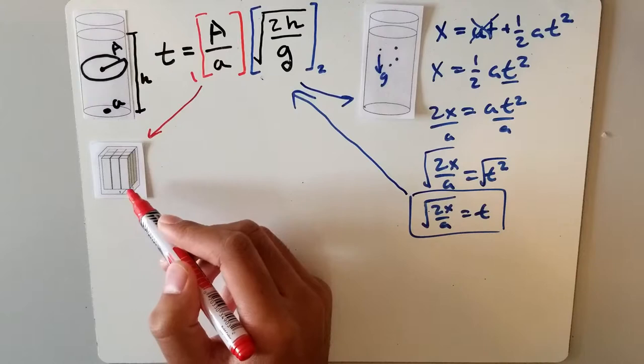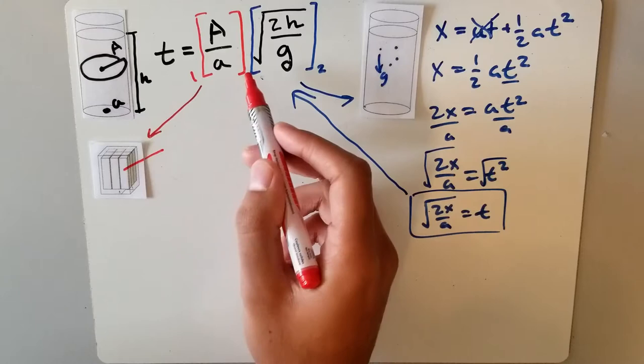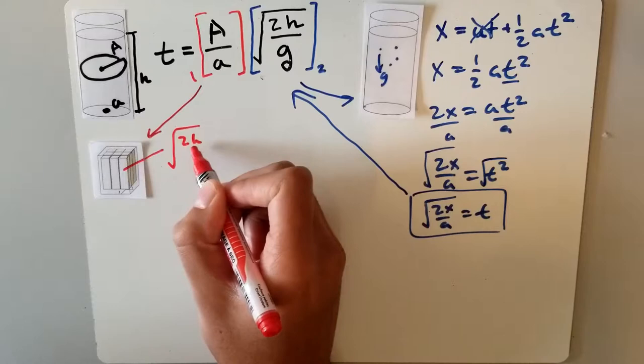Because these solid blocks are the same size as the hole, we know that the amount of time it takes to fall will be equal to the second part of the equation, being root 2h over g per block.